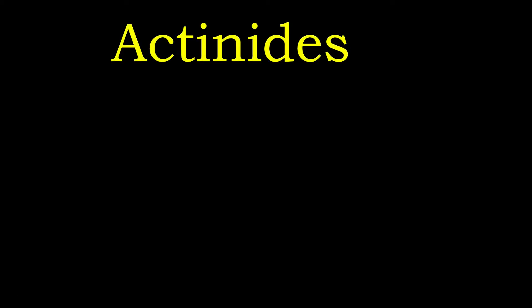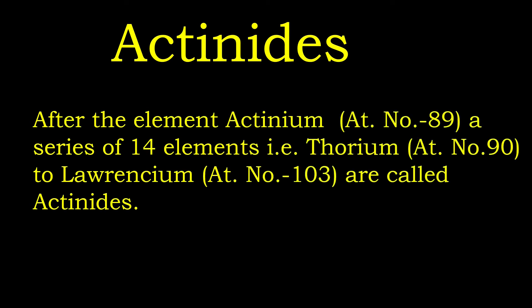Now what is actinides? Actinides can be defined this way. After the element actinium having atomic number 89, a series of 14 elements. That is thorium atomic number 90 to lawrencium having atomic number 103 are called actinides.